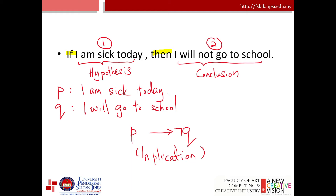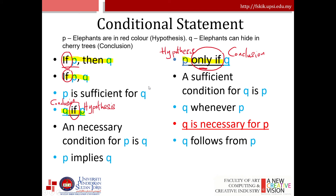If A and B represent statements, then A implies B means: if A then B. The word 'implies' is used in the strongest possible sense. For example: P is 'I am sick today' and Q is 'I will go to school.' In the implication with negation, P implies not-Q: if I am sick today then I will not go to school.